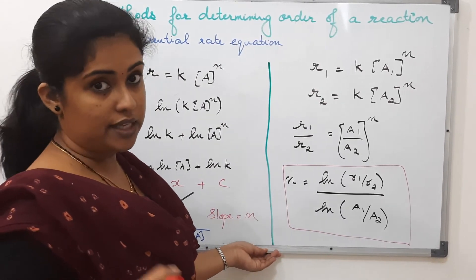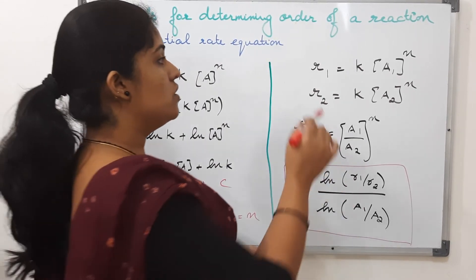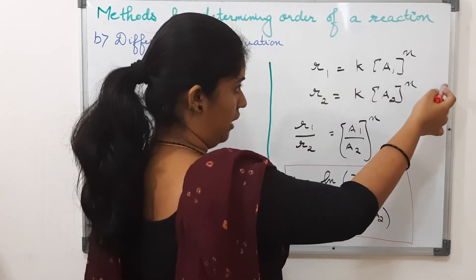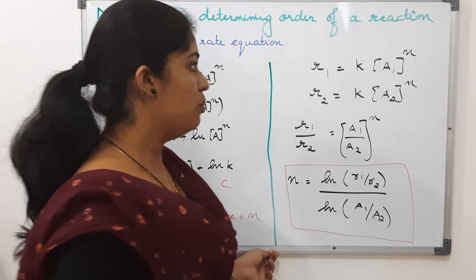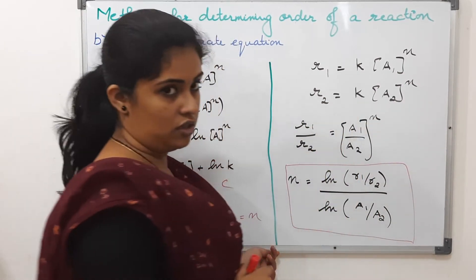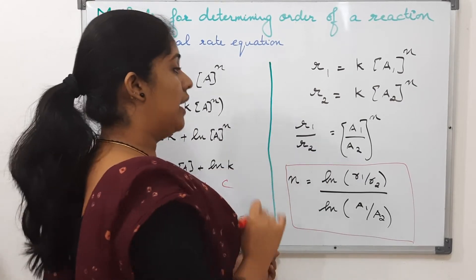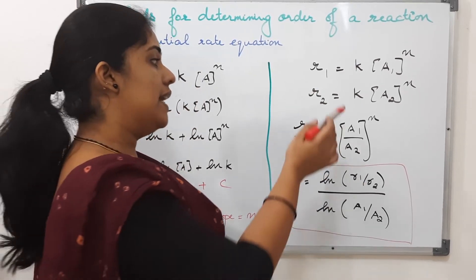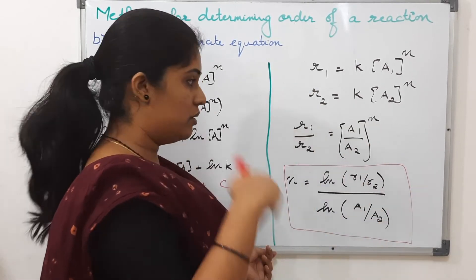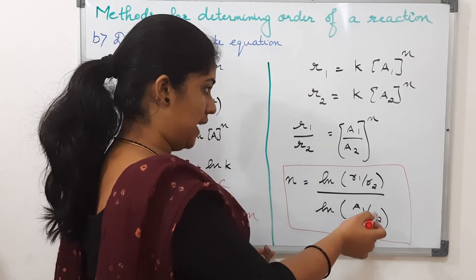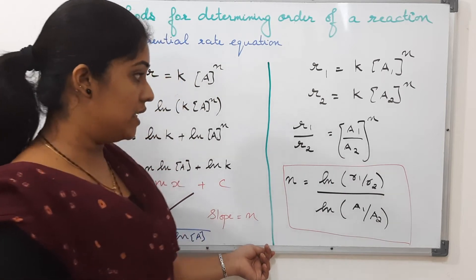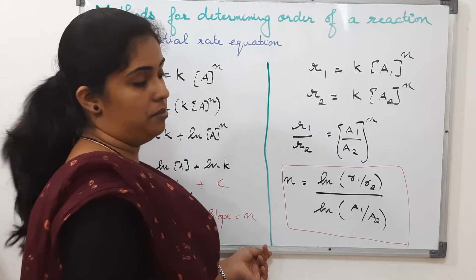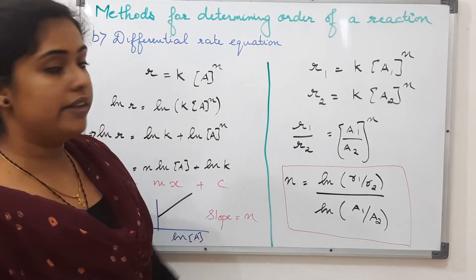The second approach is by performing the experiment twice at two different initial concentrations. R1 equals k into A1 to the power n, and R2 equals k into A2 to the power n. Dividing, R1 by R2 equals (A1 by A2) to the power n. Taking log on both sides and rearranging, n equals ln(R1 by R2) divided by ln(A1 by A2).